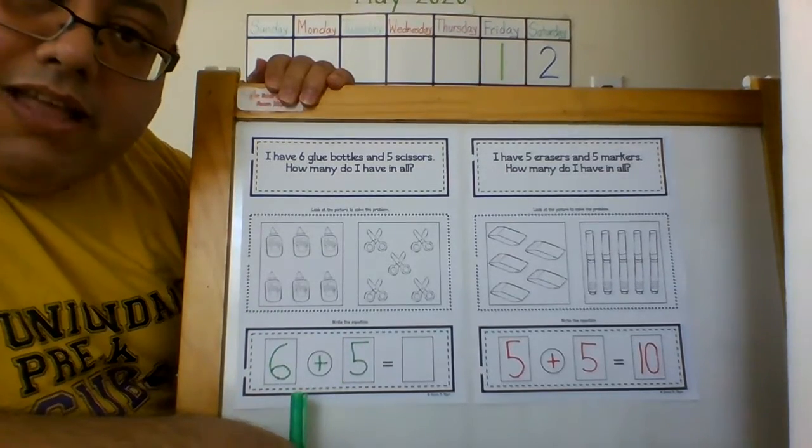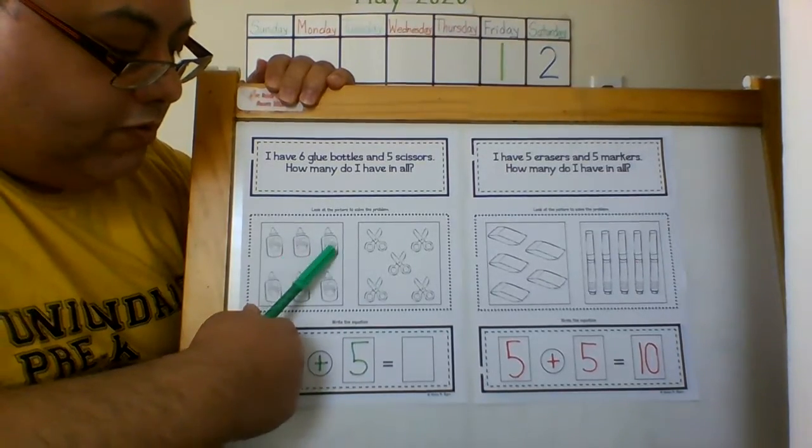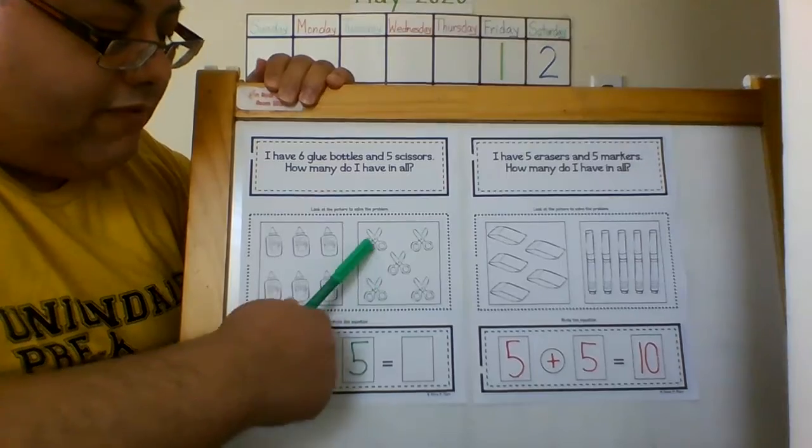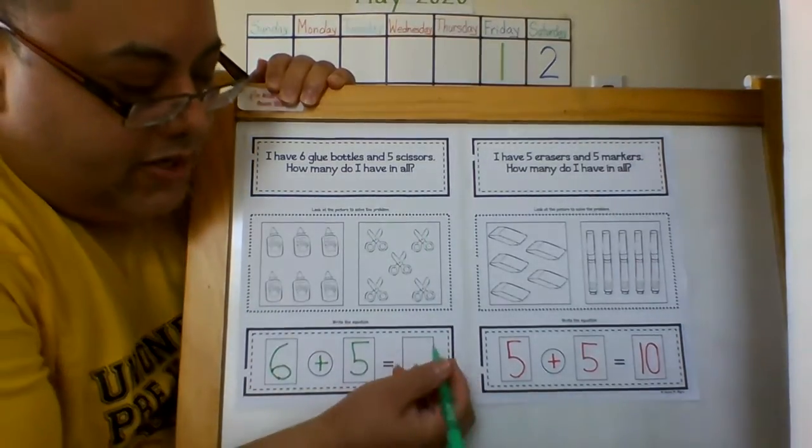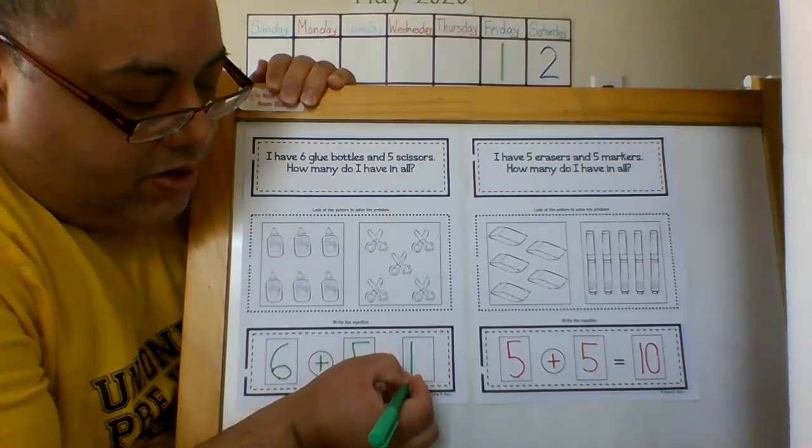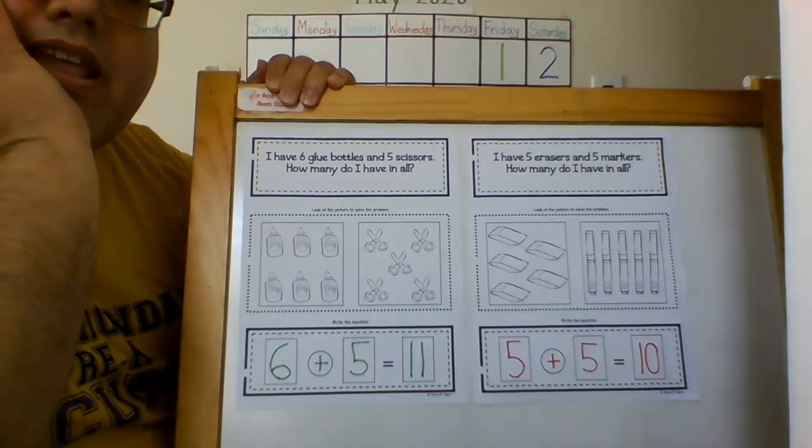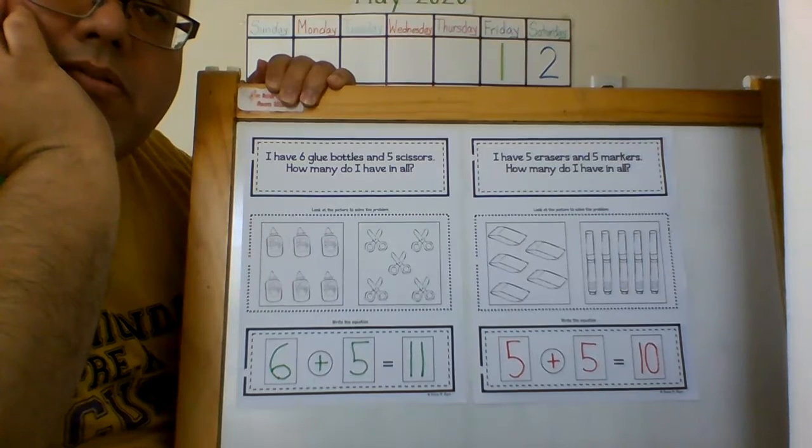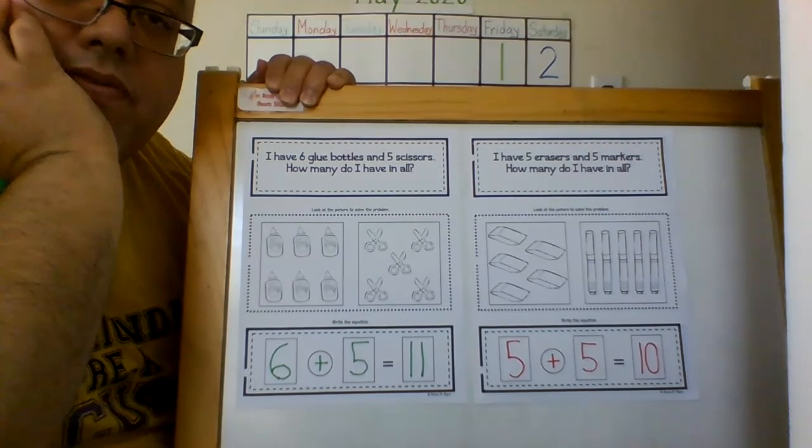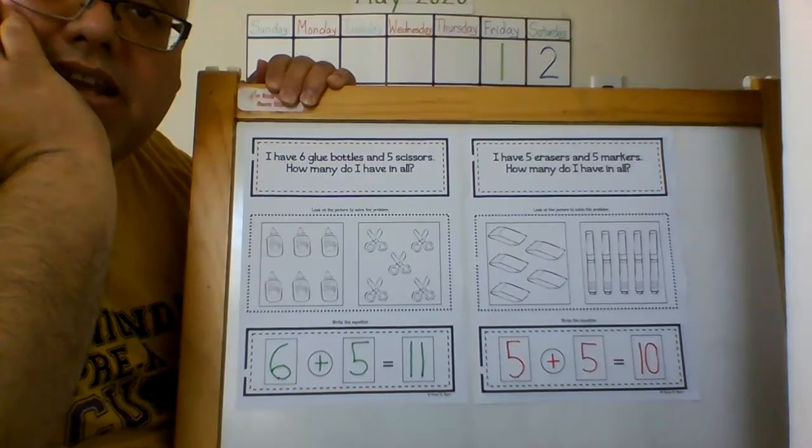If you don't know, then count the pictures. One, two, three, four, five, six, seven, eight, nine, ten, eleven. So eleven is the answer. Done you run and one is done. Done you run and one is done again. And that is the solving problem of your word problem for math today.